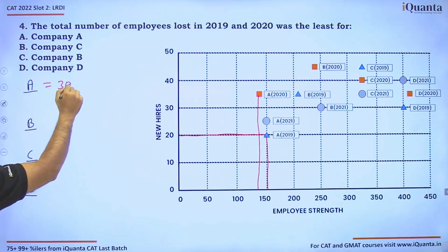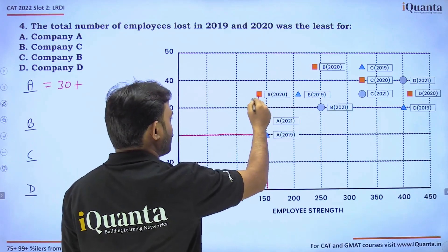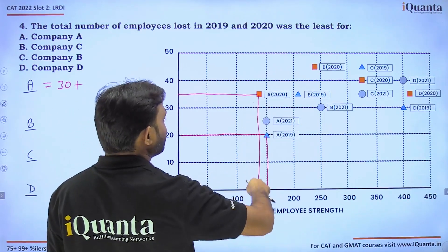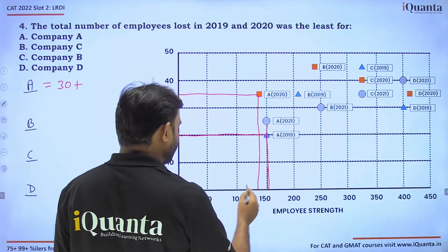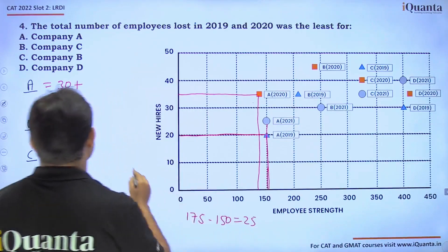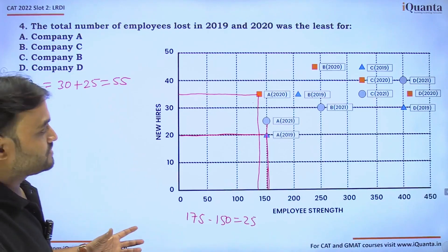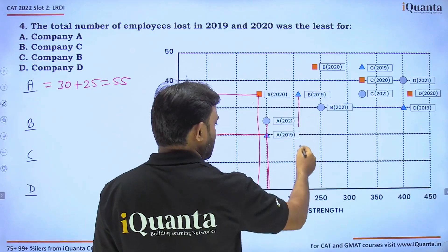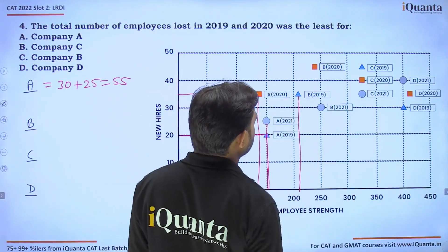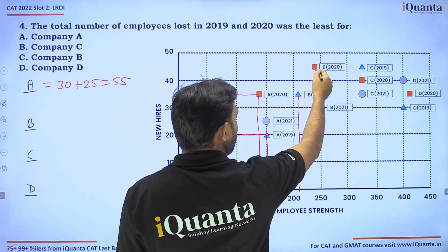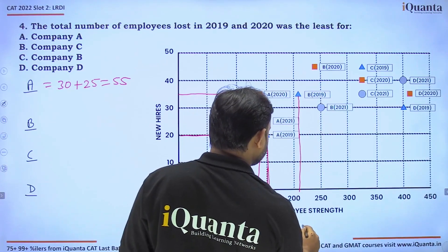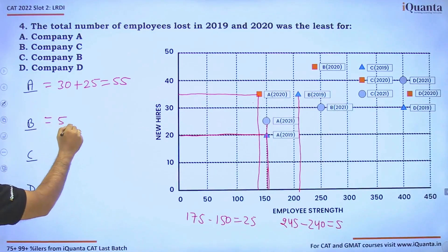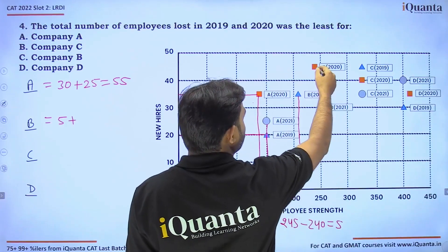For A in 2020, 140 employees plus 35 new hires gives 175, but in 2021 there are 150 employees, so 25 were lost — totaling 55 employees lost for company A. For company B in 2019, 210 plus 35 gives 245, and in 2020 there are 240 employees, so only 5 employees were lost.